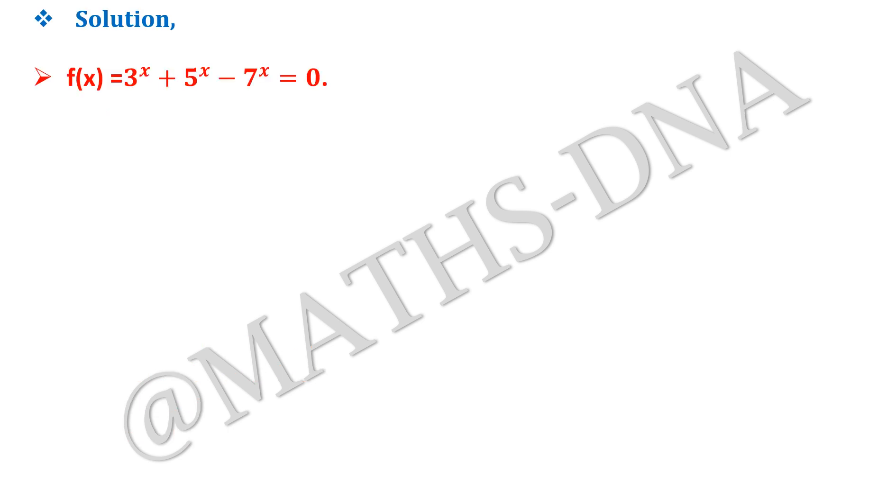It is given to us that f of x equals 3 raised to x plus 5 raised to x minus 7 raised to x equals to 0.